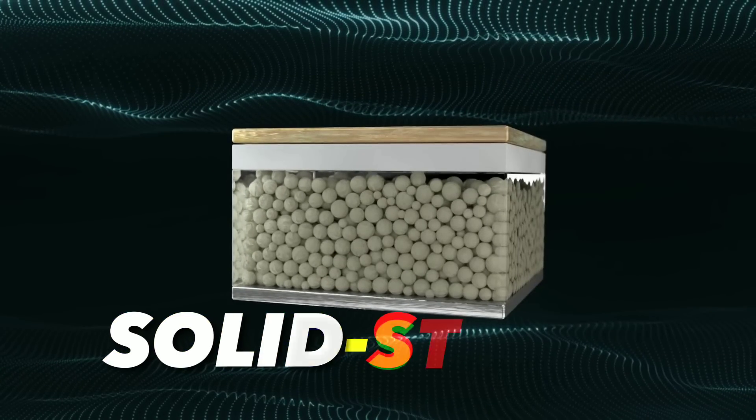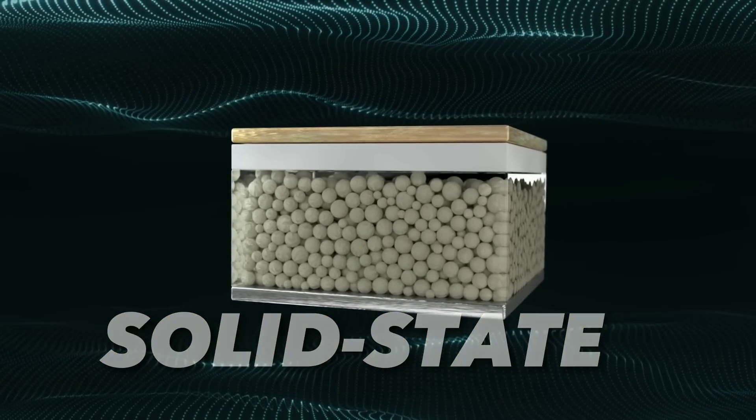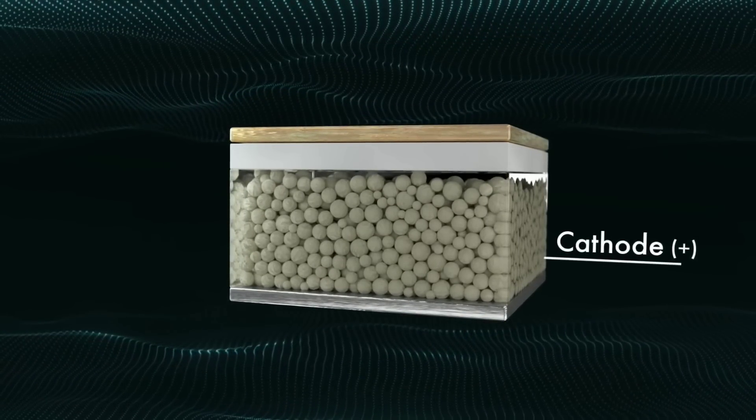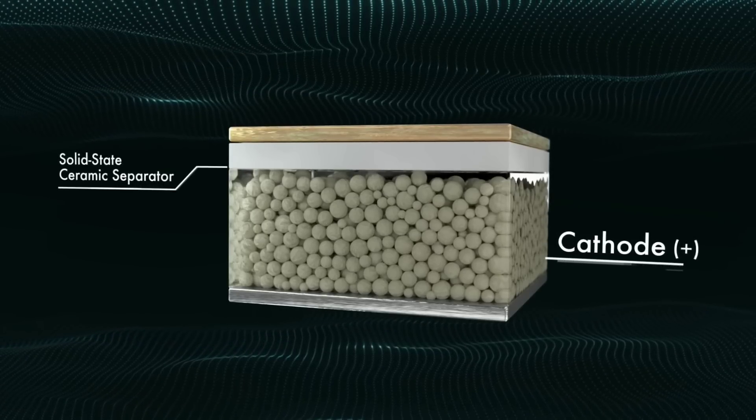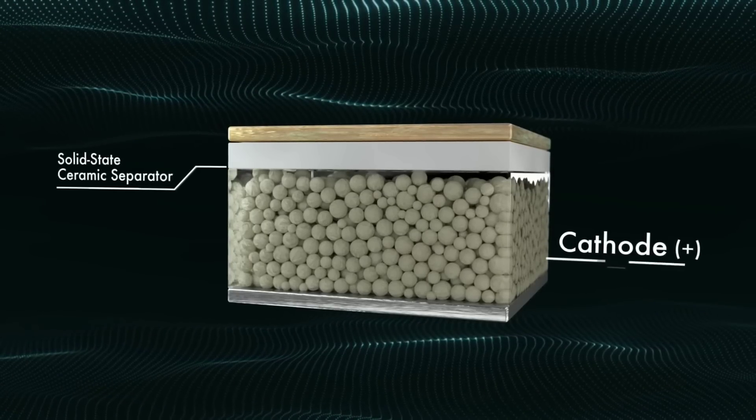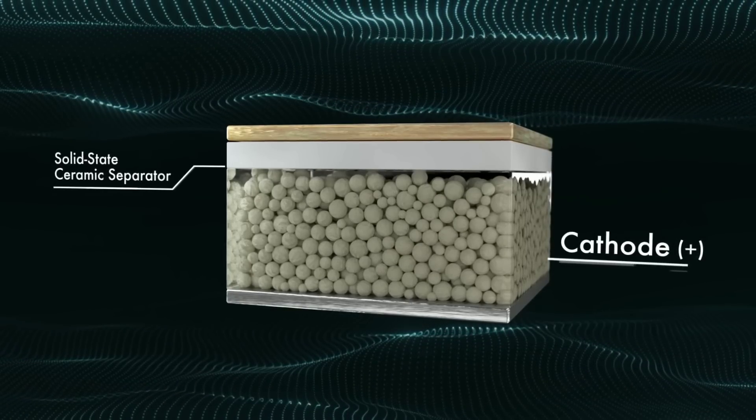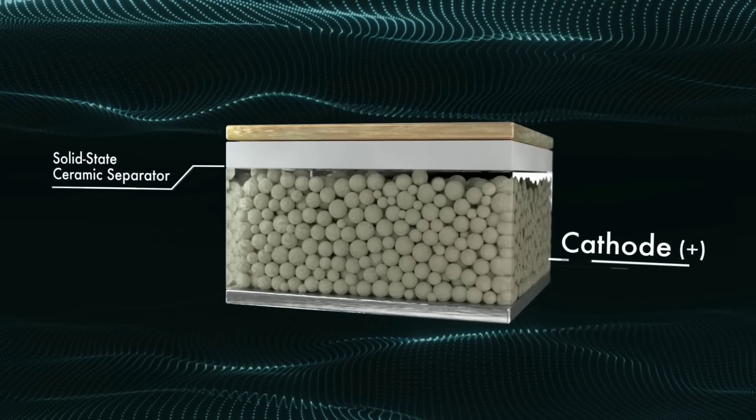A solid electrolyte is a thin layer of ceramic that does the same job as a liquid electrolyte, but without the risks. It is stable and safe at high temperatures. It does not catch fire or explode if there is a short circuit or physical damage. It does not need separators or casings to prevent leakage and corrosion.